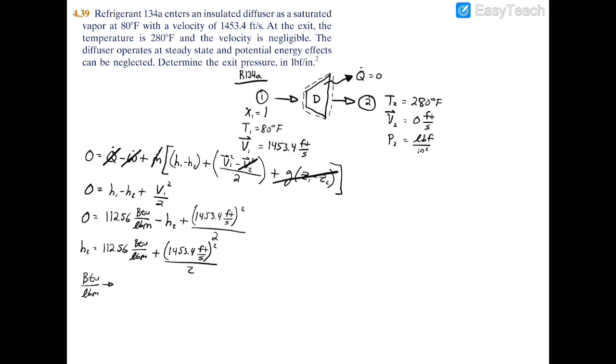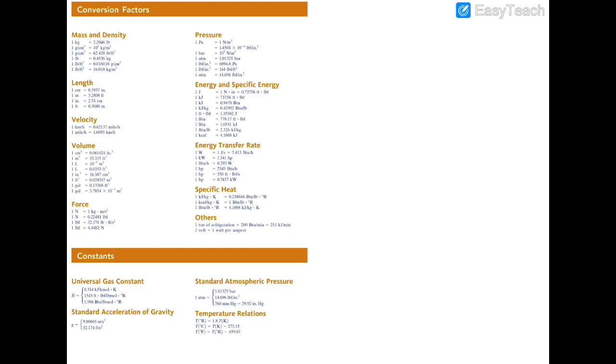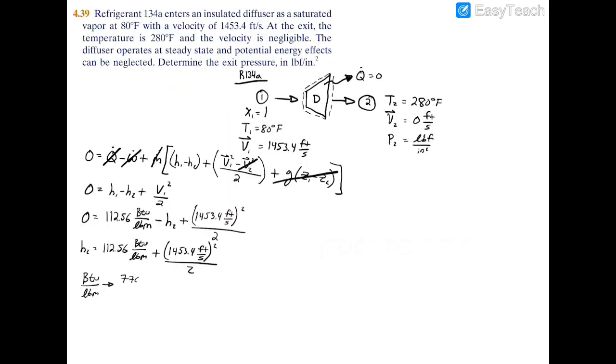From the conversion factors chart past your cover page of your textbook, you can see that a BTU is equal to 778.17 feet times pound force. So we have 778.17 feet times pound force, this is just your BTU, divided by pound mass. This is why it's important to differentiate pound force and pound mass - they're not the same thing.